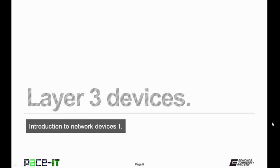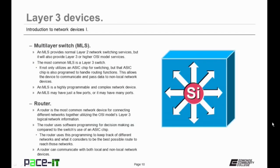Now let's move on to Layer 3 devices. First up is the multi-layer switch. A multi-layer switch provides normal Layer 2 network switching services, but it will also provide Layer 3 or higher OSI model services. The most common multi-layer switch is a Layer 3 switch. It not only utilizes an ASIC chip for switching, but that ASIC chip is also programmed to handle routing functions. This allows the device to communicate and pass data to non-local network devices.